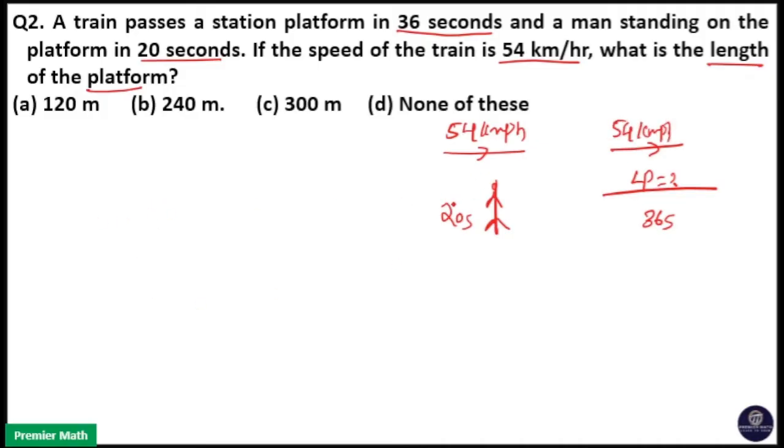In the first case, distance traveled, distance covered is equal to length of the train because man has no length here. So length of the train is equal to speed into time.